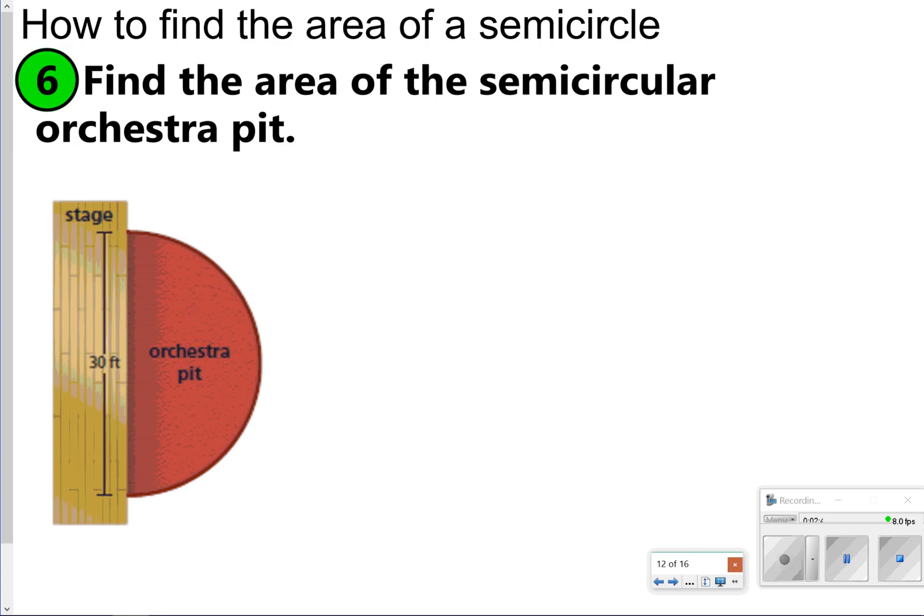The next portion of our notes is how to find the area of a semicircle. You actually should be able to try this one on your own. Just make sure that you see that the diameter is 30 feet for this semicircle. So think about what you need to do to that, and then also what you need to do once you're done finding the area. Let's go ahead and pause it to see if you can find your answer first.